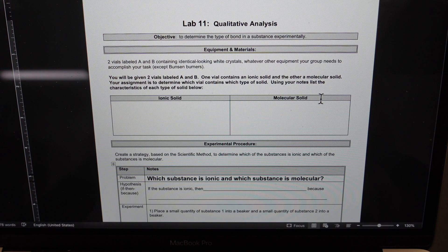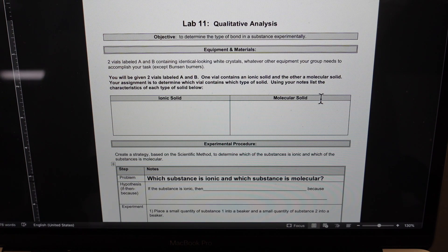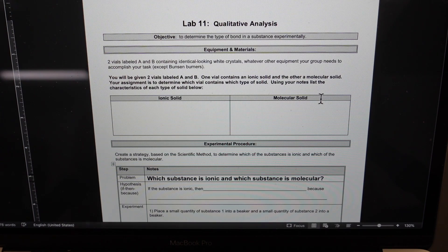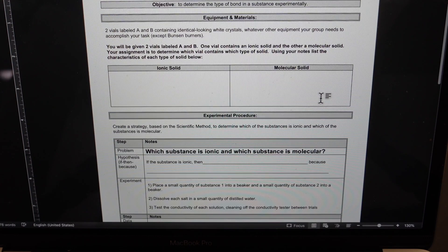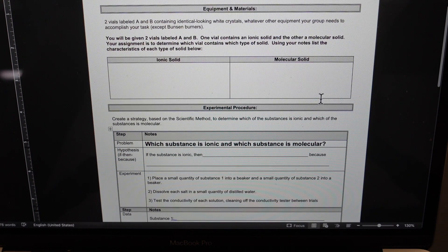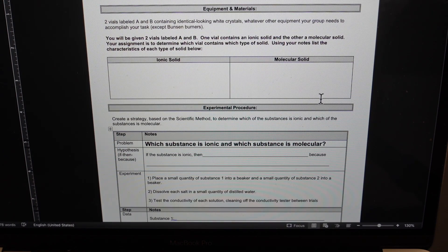So without tasting them, because that would not be safe, how could we figure out exactly which substance we have in each tube? So you will be given these vials and you'll have to determine which one contains sugar and which contains salt.